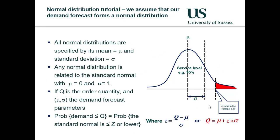Another way to do this is to use a normal distribution. All normal distributions are specified by the mean and the standard deviation. Any normal distribution is related to the so-called standard normal with mean of 0 and standard deviation of 1. If Q is the order quantity and mu and sigma are the demand forecast parameters, then the probability of demand being less than or equal to Q equals the probability on the standard normal curve that is less than or equal to Z, where Z equals Q minus the mean divided by the standard deviation.